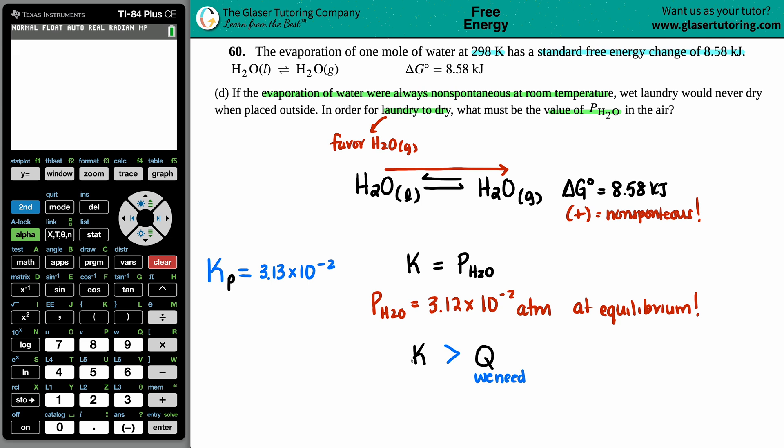So in order for this laundry to dry, we know that the pressure of the H2O has to be less than the equilibrium pressure, which is 3.12 times 10 to the negative 2 atm, because anything less you need to get it back and you will go to the products. Anything more, you favor the opposite direction.